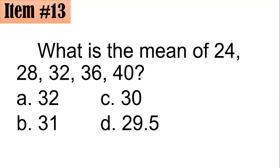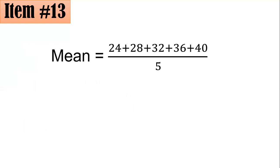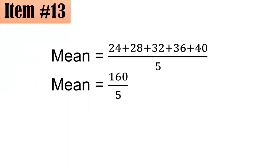Number 13. What is the mean of 24, 28, 32, 36, and 40? To get the mean, we get the sum of these numbers and divide by 5 because there are 5 of them. The mean is 24 plus 28 plus 32 plus 36 plus 40, all over 5. The sum is 160 over 5, which is 32 — letter A.